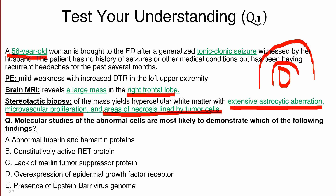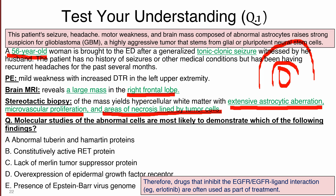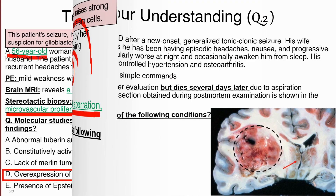The question asks what molecular finding is most likely on studies of the abnormal cells. Given the clinical picture of seizures, headaches, motor weakness, and a brain mass with pseudopalisading, this is glioblastoma multiforme. The answer is overexpression of epidermal growth factor receptor (EGFR amplification) — a very high-yield point. Drugs such as erlotinib that inhibit epidermal growth factor receptor interaction are part of treatment.